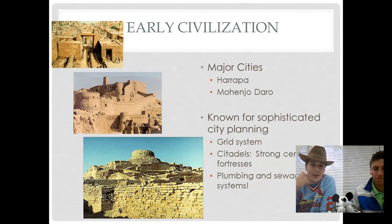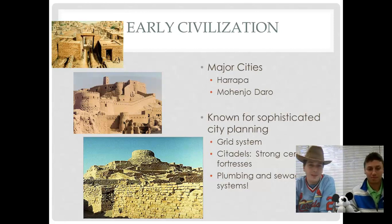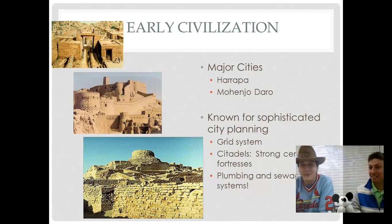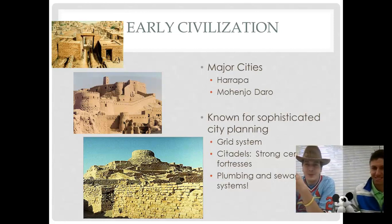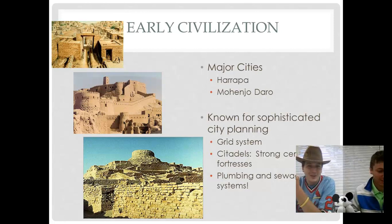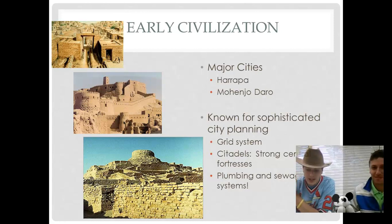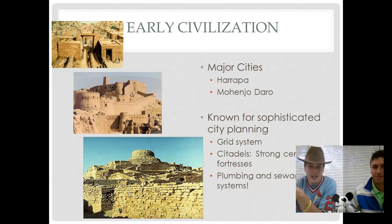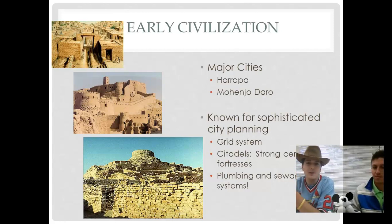The ancient Indians are also known for something we take for granted: plumbing and sewage systems. Prior to this, most ancient civilizations, when they had their waste, would either dump it in the streets or if you were living in a two-story building, you might dump it out the window onto the street. The ancient Indians actually invented a system of plumbing and sewage so that waste would be sent underground in tunnels along the side of the road and then emptied into the rivers. Pretty advanced for these ancient civilizations.